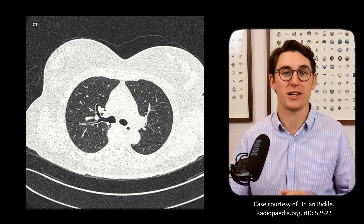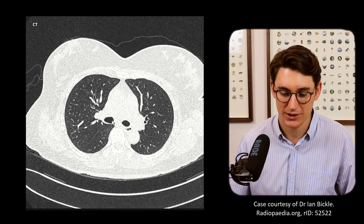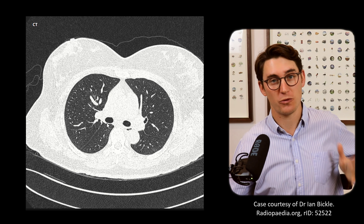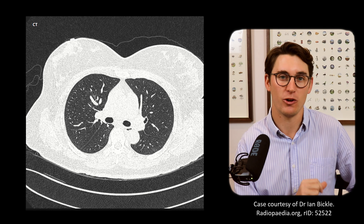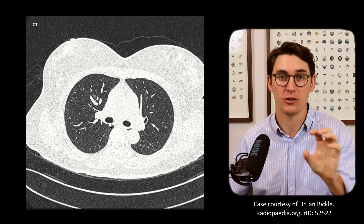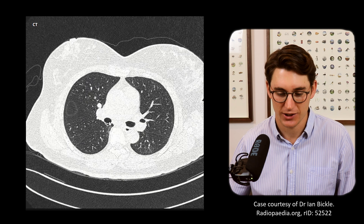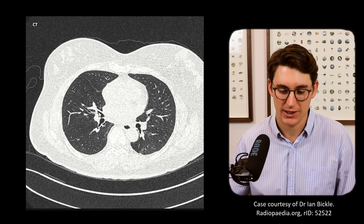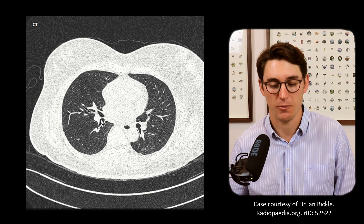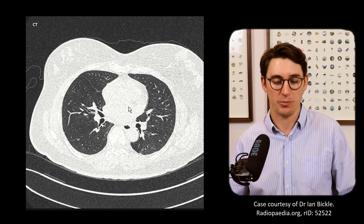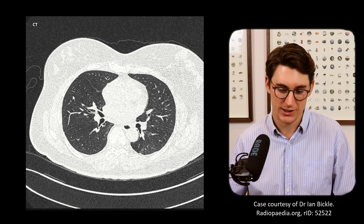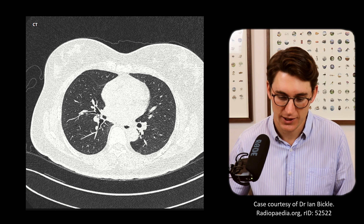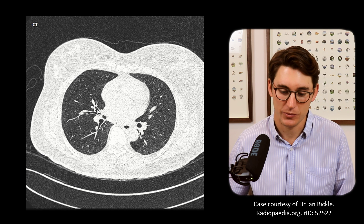The right main bronchus has now become our bronchus intermedius, which splits into our middle and lower lobe bronchi. Since the middle lobe is anterior and the lower lobe is posterior, we expect the middle lobe bronchus to branch off anteriorly. Scrolling down, we see the right middle lobe bronchus coming off, and because the middle lobe extends laterally we can identify a lateral and a medial branch.